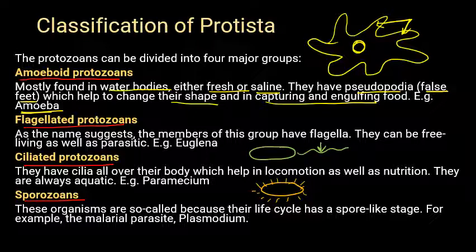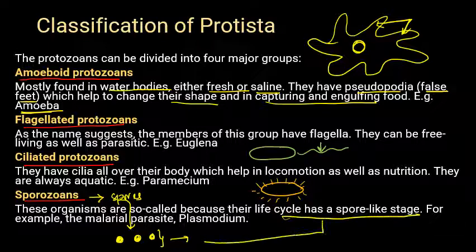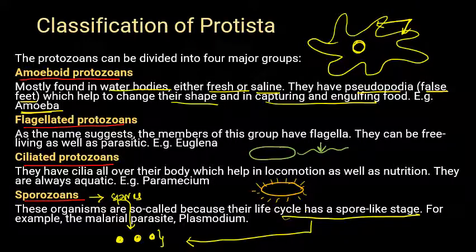Sporozoans are so called because their life cycle has a spore-like stage. During their entire life cycle they exist in the form of spores. The malaria-causing parasite Plasmodium falciparum also exists in spore form, which is why it is classified as a sporozoan.